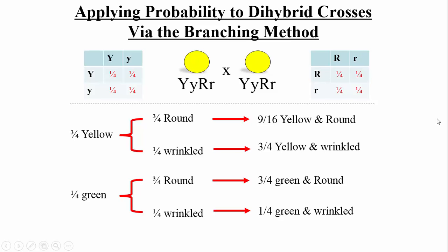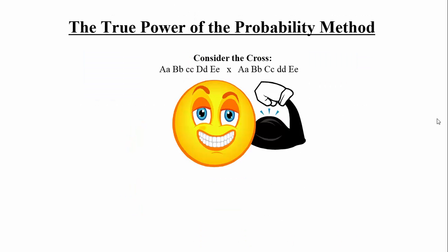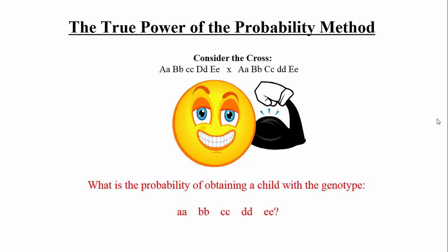The final topic is how to use the probability method for a cross involving five or more genes. We have five genes here. The question is: if these are the parents, what is the probability of obtaining an offspring with the genotype homozygous recessive for all five genes — little a little a, little b little b, and so on? We invoke Mendel's principle of independent assortment along with the multiplication rule.